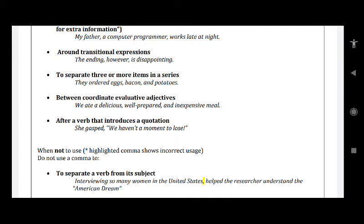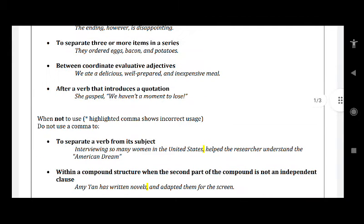Then, between coordinate evaluative adjectives. For example: 'We ate a delicious, well-prepared, and inexpensive meal.' How was the meal? It was delicious, it was well-prepared, and at the same time it was inexpensive. That is why we have used these commas.